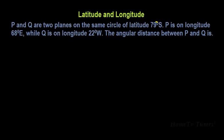Another example. P and Q are two points on the same circle of latitude 79 degrees south. P is on longitude 68 degrees east while Q is on longitude 22 degrees west. The angular distance between P and Q is what we are to look for.